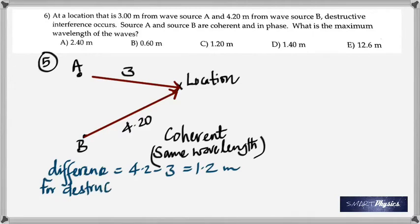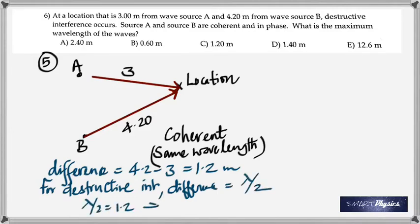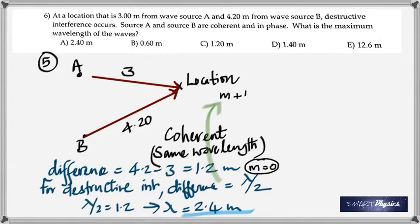And the difference in path should be equal to M plus half times lambda. Because to get destructive interference, the crest of one must be superposed on the trough of the other. So the path difference must be lambda by 2, that's the minimum. Lambda by 2 is 1.2, and so lambda is 2.4. Generally, the path difference must be M plus half lambda. In this case, M is 0 because we're looking for the minimum path difference.